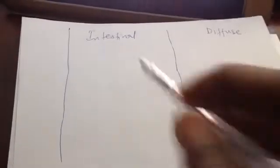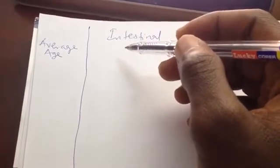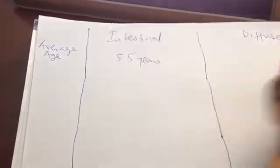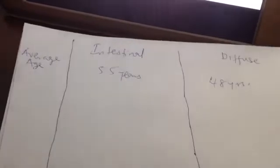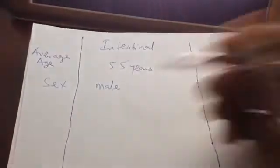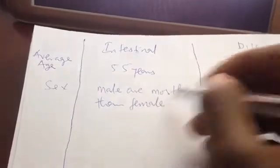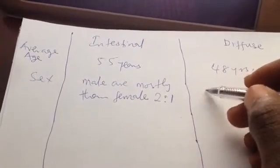There are many factors used to differentiate these two types of gastric cancer. Number one is age group — the mean age of developing the intestinal type carcinoma is around 55 years of age. In terms of sex, males are mostly affected by the intestinal type, as much as twice the rate of females — a ratio of 2:1.